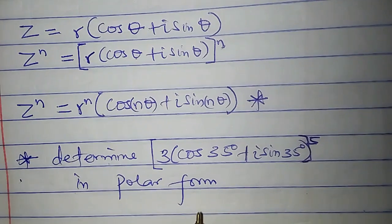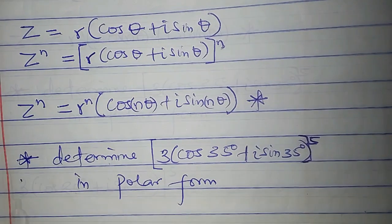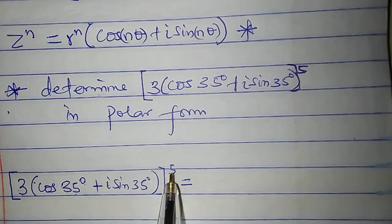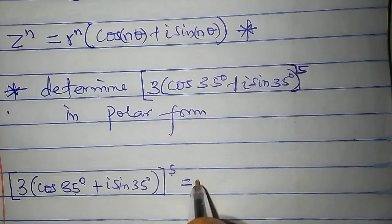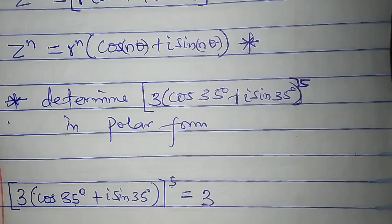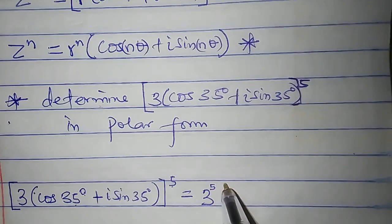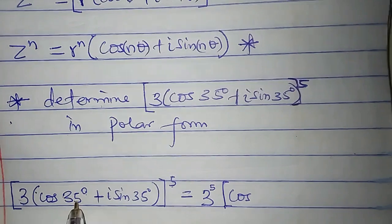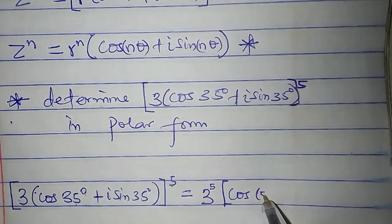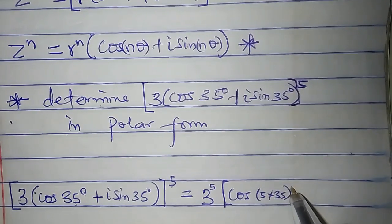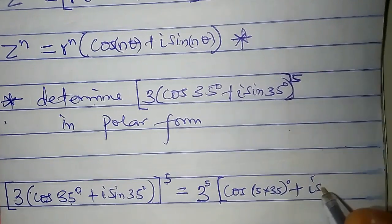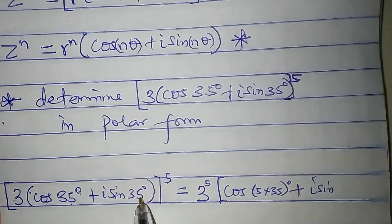I'm going to make use of De Moivre's theorem. [3 times cos 35 degrees plus i sine 35 degrees] all to the fifth is equal to 3 to the power of 5 times cos 5 times 35 degrees plus i sine 5 times 35 degrees.